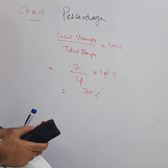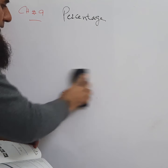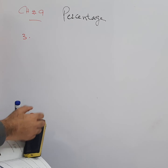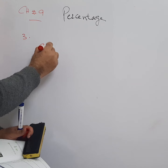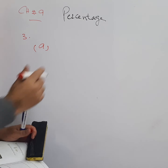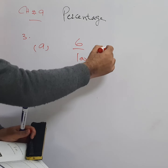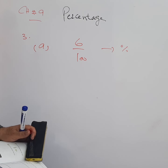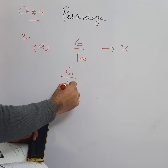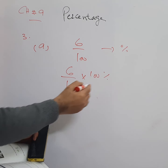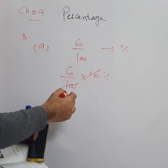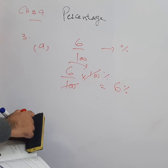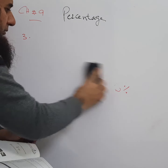So 70 percent of the stamps are local stamps. Now question number three: express each of the following as a percentage. Part a is 6 over 100. We multiply it by 100 percent. The 100s cancel, giving 6 into 1 equals 6, so 6 percent is the answer for part a.